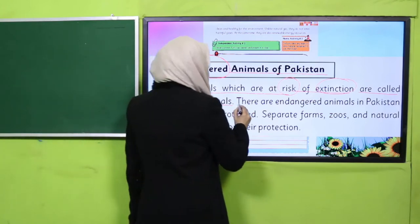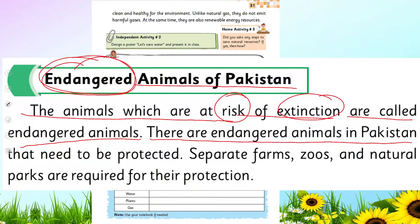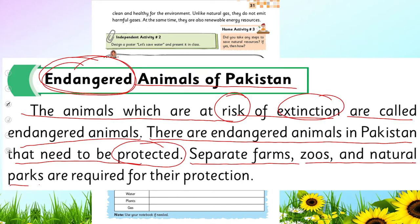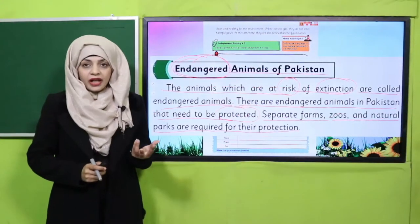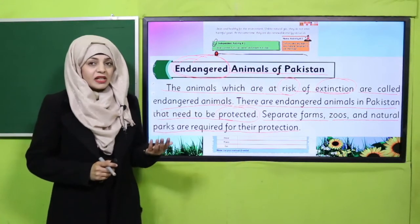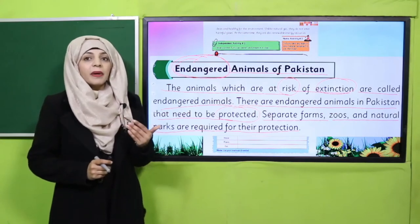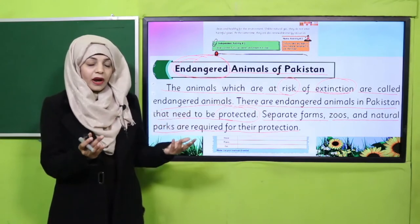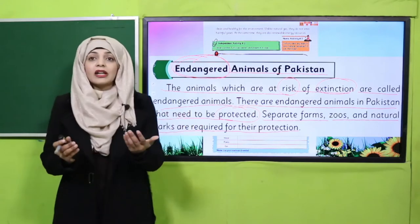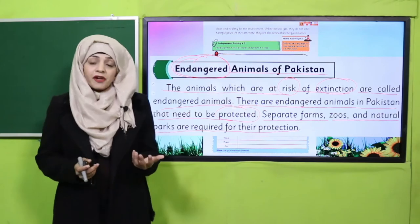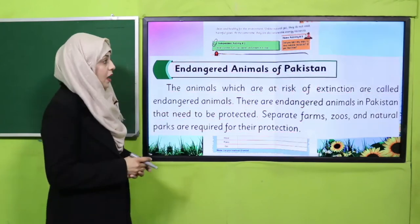There are endangered animals in Pakistan that need to be protected. Separate farms, zoos, and natural parks are required for their protection. To save such animals whose numbers have become very low, we must provide them a proper habitat — proper zoos or natural habitats — so that they can breed and we can save them from extinction.